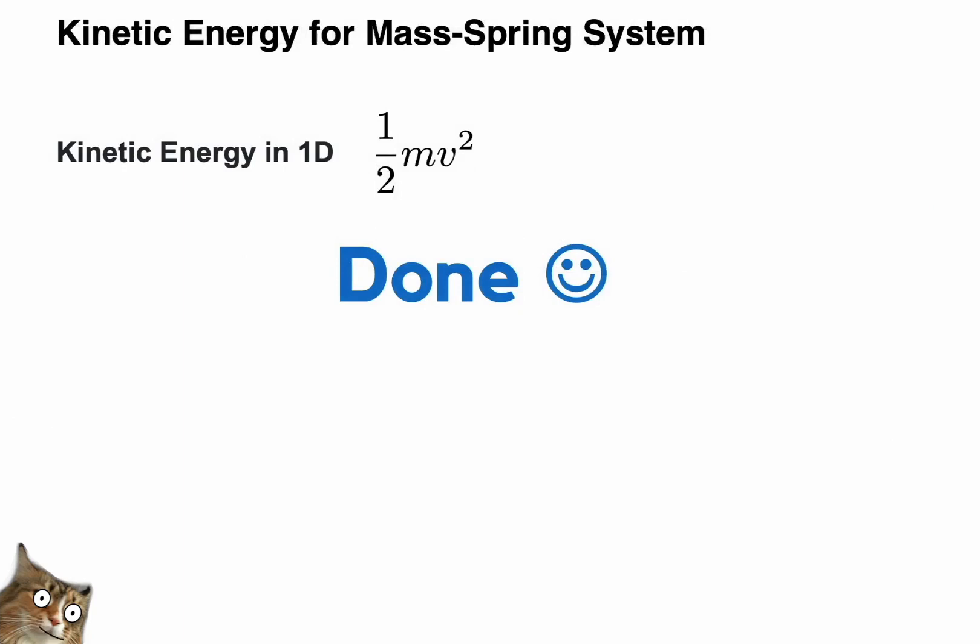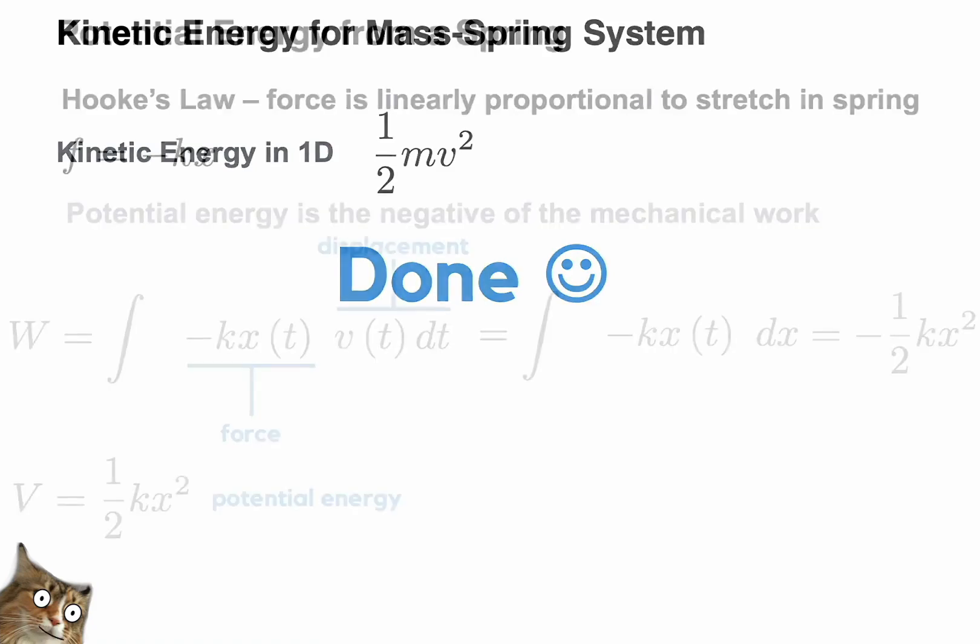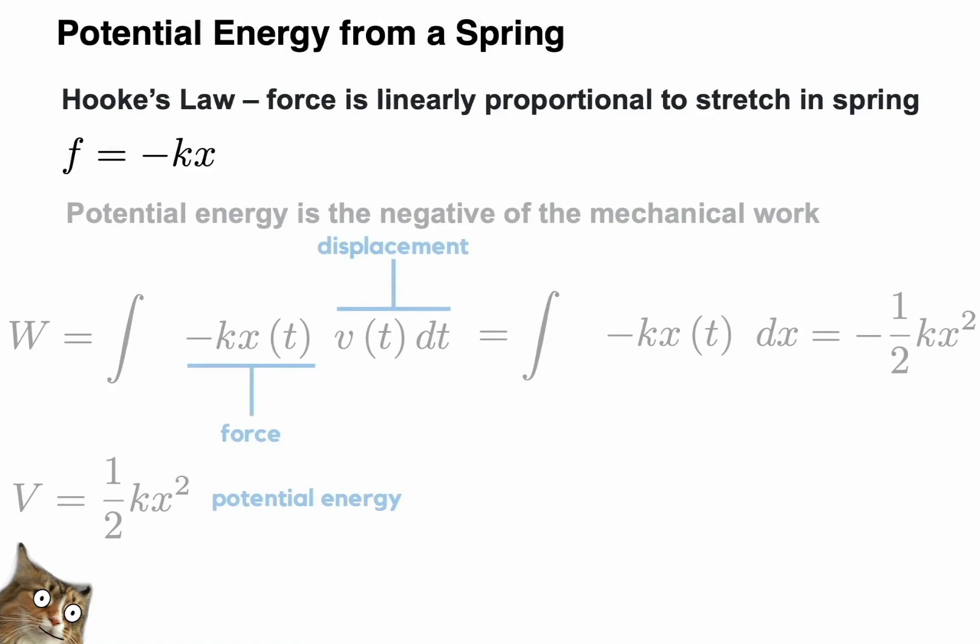Step two. Figure out the kinetic energy in terms of q and q-dot. In one dimension, this is again just the standard one-half mass times velocity squared. Since we know that velocity is just q-dot, we already know the kinetic energy in terms of q-dot, and hence we're done. So that was particularly simple in this case. Very good. Step three. Figure out potential energy in terms of q. Okay. This is a little more involved, because what we know about our spring is initially limited.